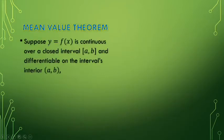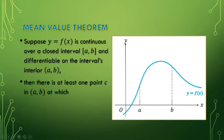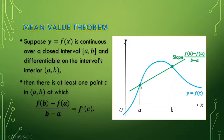Now, the mean value theorem: suppose that the function y = f(x) is continuous over the closed interval [a, b] and differentiable on the interval's interior, same conditions as Rolle's theorem. Given the curve of y = f(x) on the interval from a to b, then there is at least one point c on the open interval (a, b) at which f(b) minus f(a) over b minus a — this is actually the slope of the secant line on our interval.